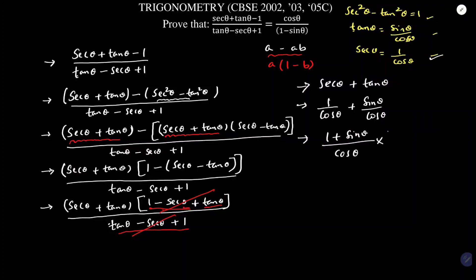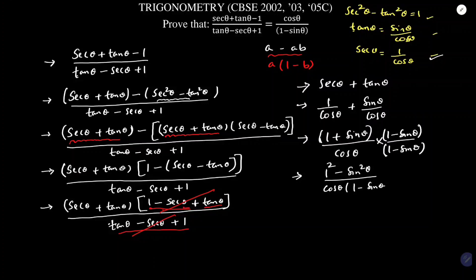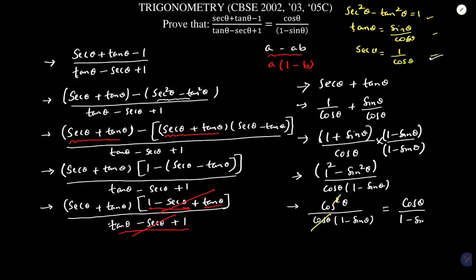I will multiply and divide by (1 - sin θ). The numerator becomes (1 + sin θ)(1 - sin θ) = 1 - sin²θ = cos²θ, using a² - b² identity. The denominator is cos θ(1 - sin θ). Now cos²θ divided by cos θ gives cos θ, so I am left with cos θ/(1 - sin θ), which is what we needed to prove. This is one of the most important problems from trigonometry.